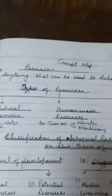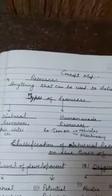Anything that can be used to satisfy a need — koi bhi chiz jo humari need ko satisfy kare. Just like a pen: jab hume pen ki need hoti hai to write a letter or a note, that is a resource.